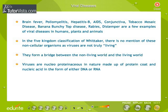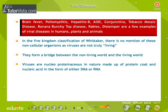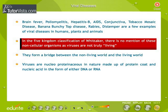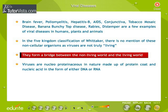Viral Diseases: Brain Fever, Poliomyelitis, Hepatitis B, AIDS, Conjunctivitis, Tobacco Mosaic Disease, Banana Bunchy Top Disease, Rabies, and Distemper are a few examples of viral diseases in human beings, plants, and animals. In the Five Kingdom Classification of Whittaker, there is no mention of these non-cellular organisms, as viruses are not truly living. They form a bridge between the non-living world and the living world.